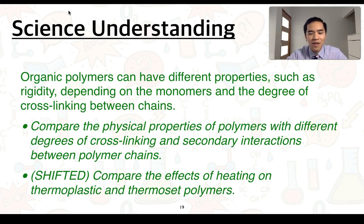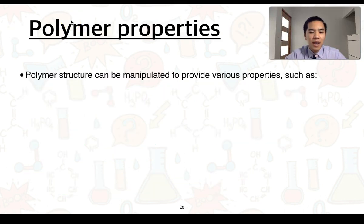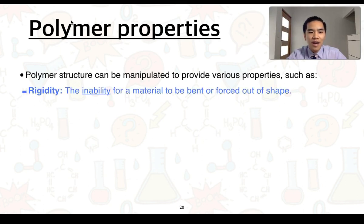We also need to compare the effects of heating on thermoplastic and thermoset polymers. The structure of a polymer can be manipulated to provide various properties, and this can include things like rigidity.